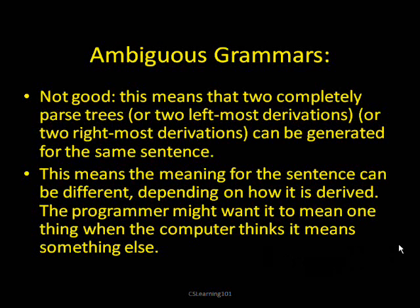Now let me tell you what ambiguous grammars are. Ambiguous means that you could make two completely different parse trees, or two leftmost derivations, or two rightmost derivations, for the same sentence with the same grammar. This means that a sentence could be syntactically correct in a grammar but may have different meanings depending on how it was derived. The programmer doesn't want that, because the computer might end up with a different meaning for what you just did from what you thought you did. So ambiguous grammars should be avoided when possible.